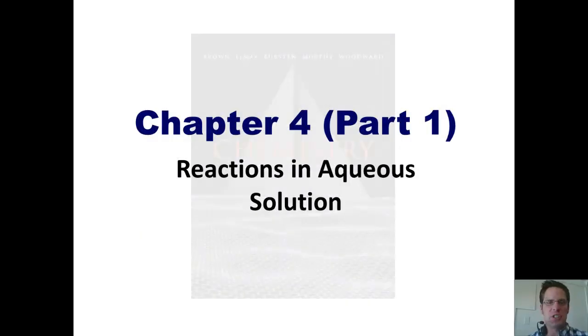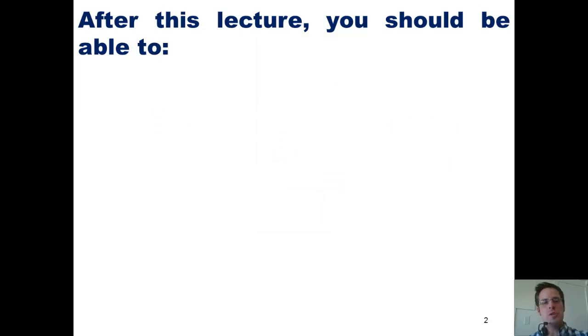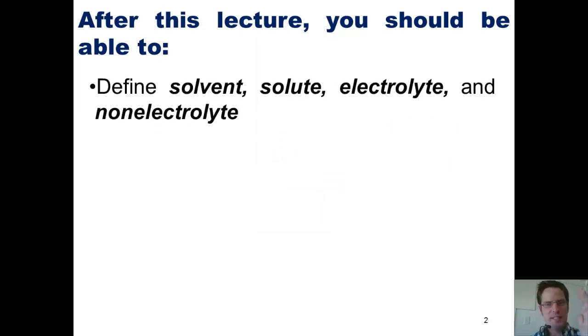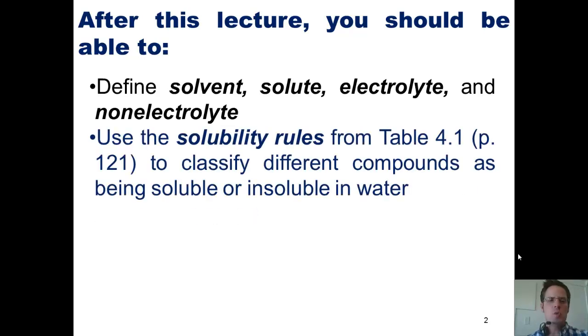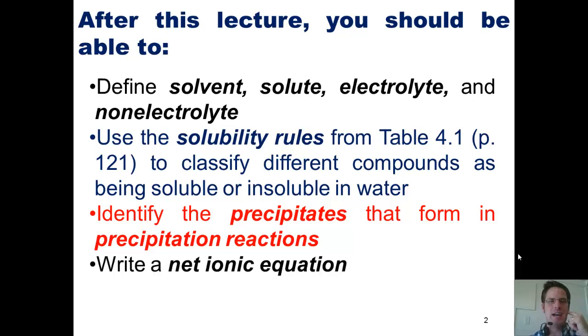Welcome, students, to our first lecture in Chapter 4's installment of our never-ending series on general chemistry. Today we're going to talk about reactions in aqueous solutions. After today's lecture, you should be able to define the terms solvent, solute, electrolyte, and non-electrolyte. Use the solubility rules from Table 4.1 to classify different compounds as being soluble or insoluble in water, identify the precipitates that form in precipitation reactions, and write a net ionic equation.